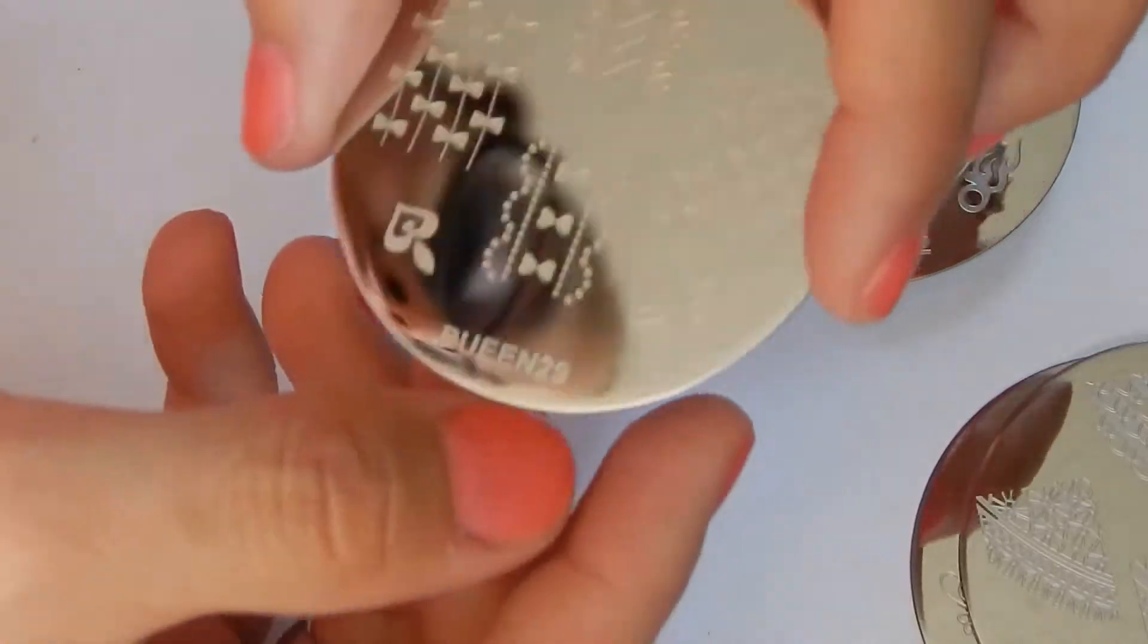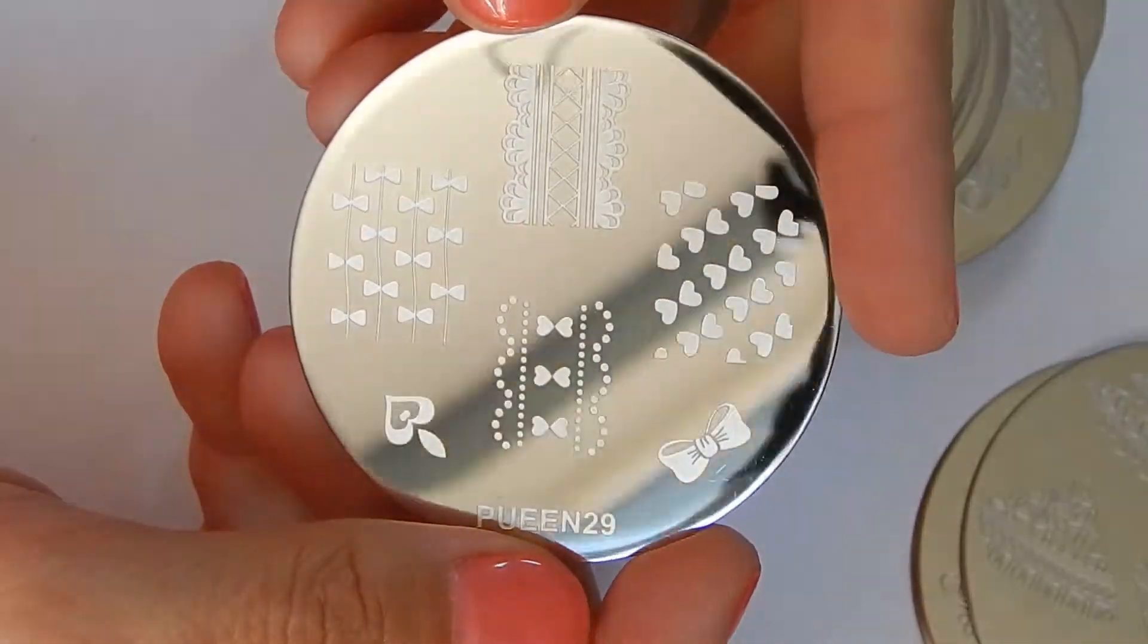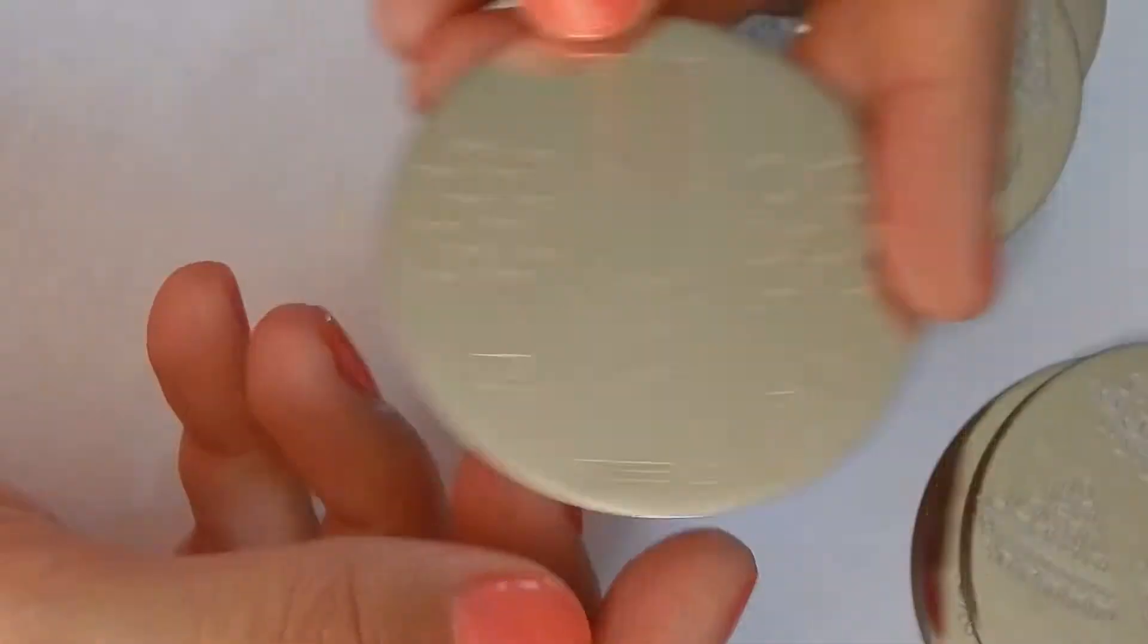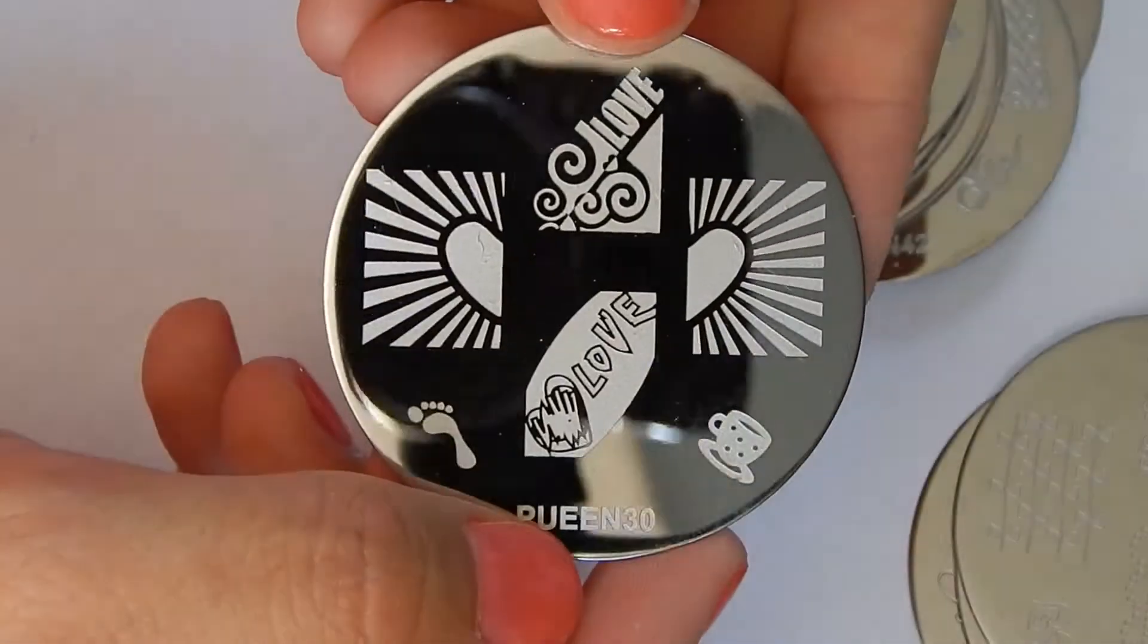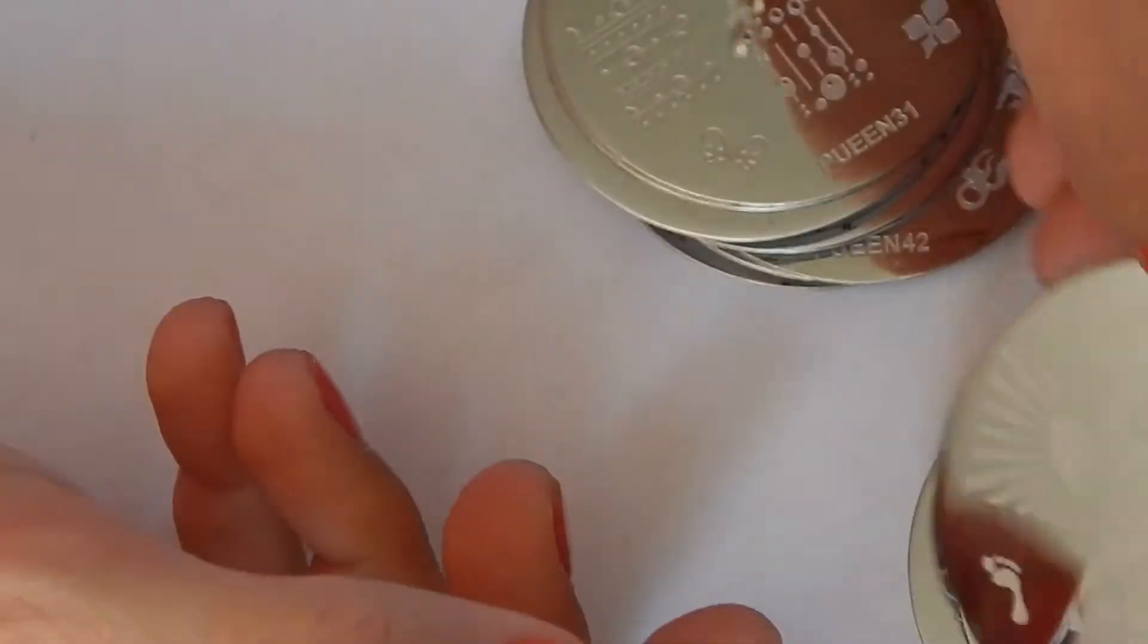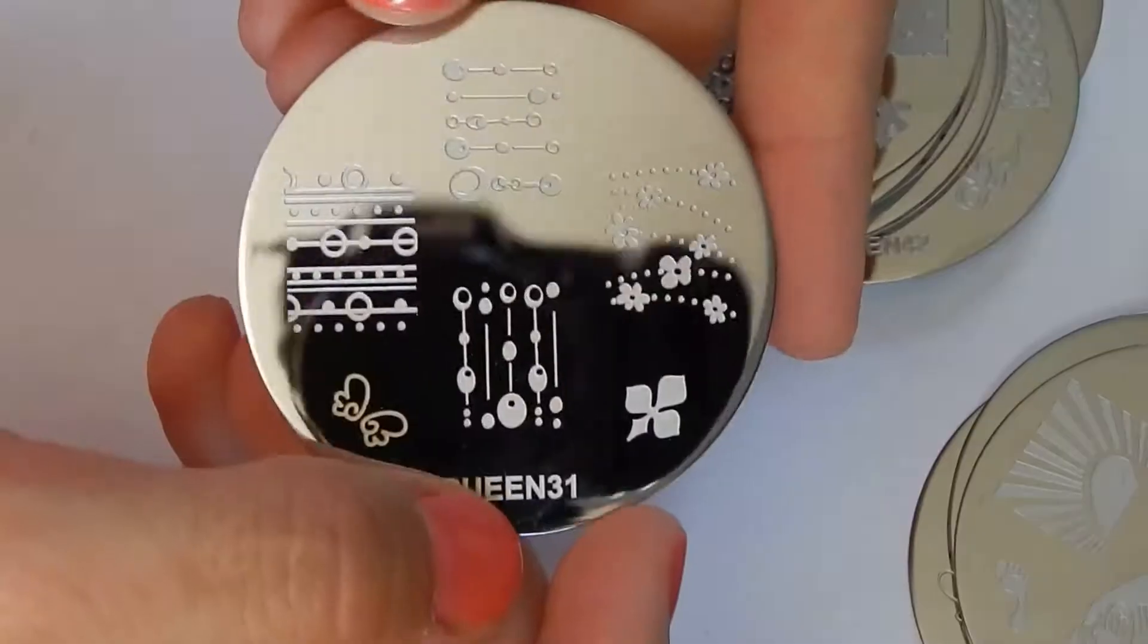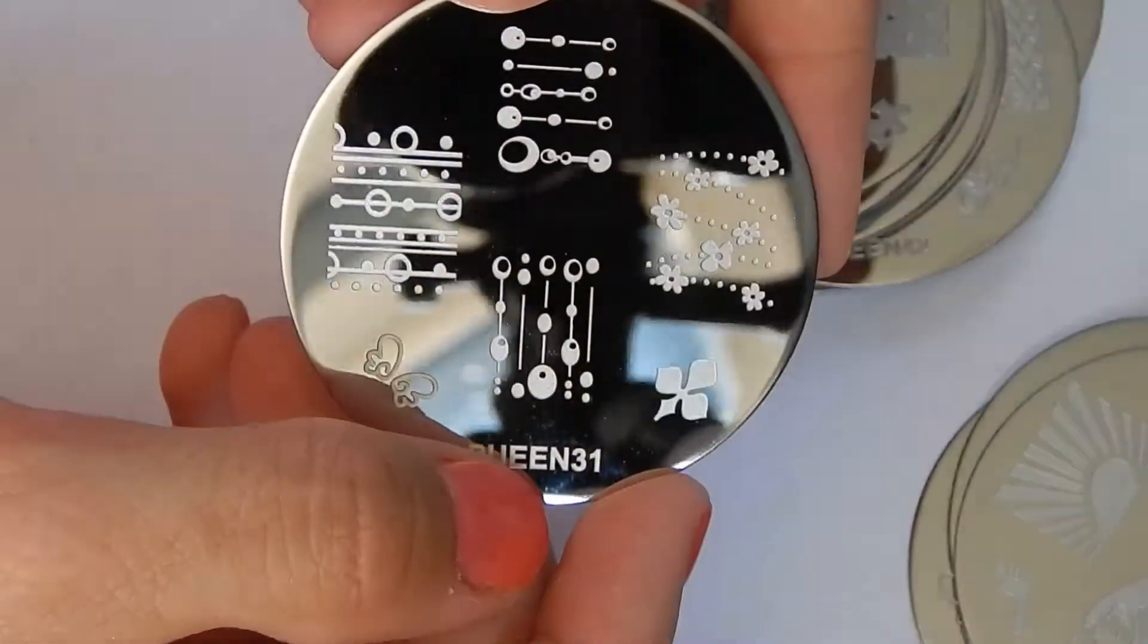And what I like about this collection, this one's 29, is that they are full nail designs, not the half nail designs that I see on a lot of plate collections. That's really what has deterred me from getting any more stamping plates because I don't care too much for the half nail French tip designs.